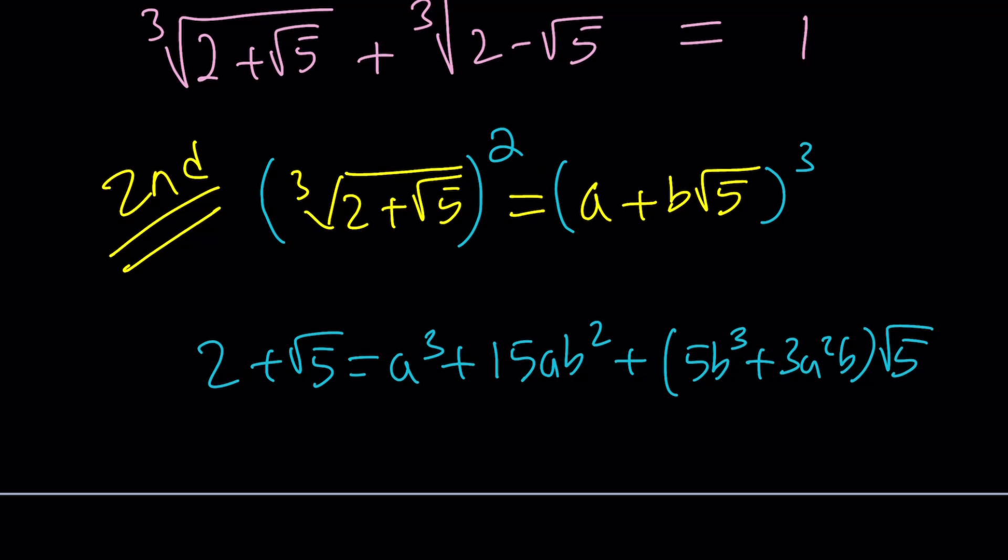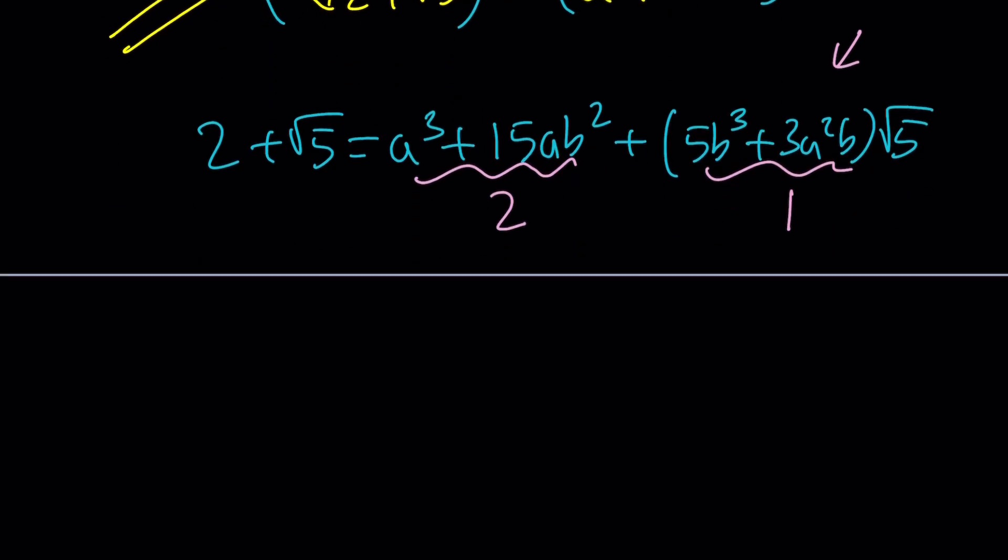And here, by comparison, the rational number on the right hand side is this because this is irrational. I mean, if a and b are 0, obviously it's not going to work, right? So this is supposed to equal 2 and this is supposed to equal 1. That gives you a system of equations like this. a cubed plus 15ab squared equals 2 and 5b cubed plus 3a squared b equals 1. This is actually a homogeneous system. How nice is that?